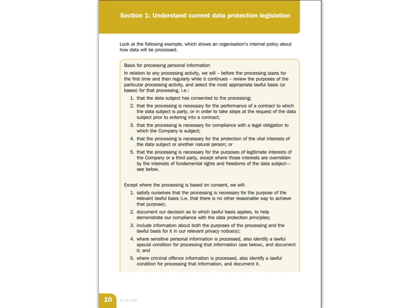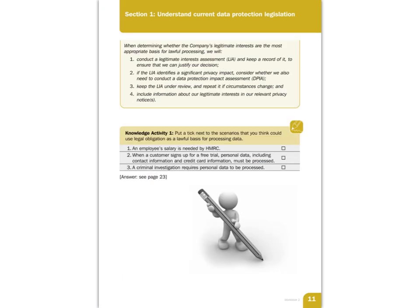This task is really to use an example of an organisation's internal policy. It shows different areas where they base processing on consent, and other areas where they may use other bases to present other information. You can see an internal policy covering consent first — what five items there are — and then what they'll do to show processing is necessary and document the decision. There's a small knowledge activity where you put up to three ticks in boxes, and you can check the answers on page 23 of the guide to see which ones could be using legal obligation as a lawful basis for processing data.